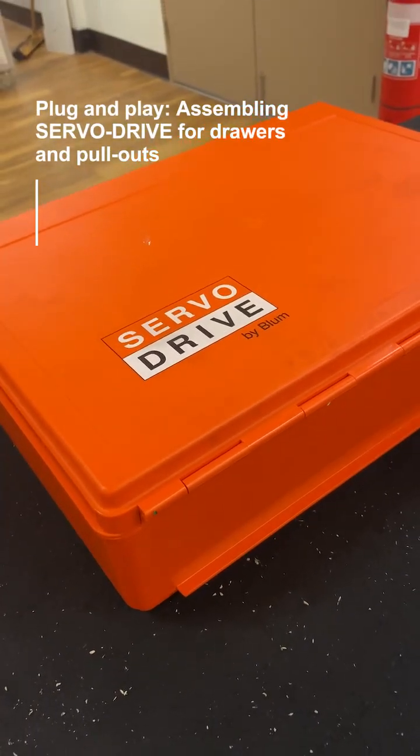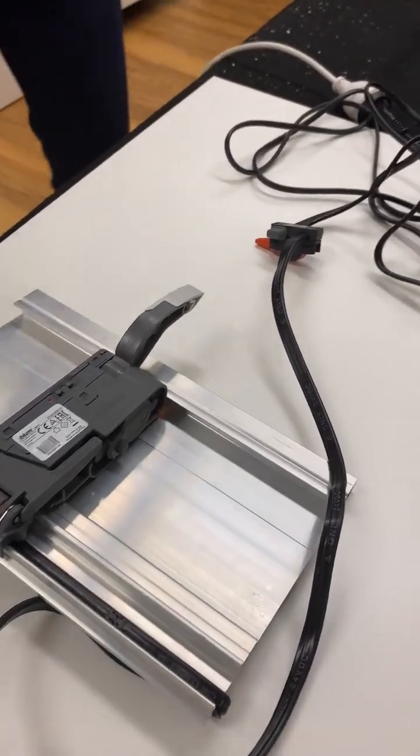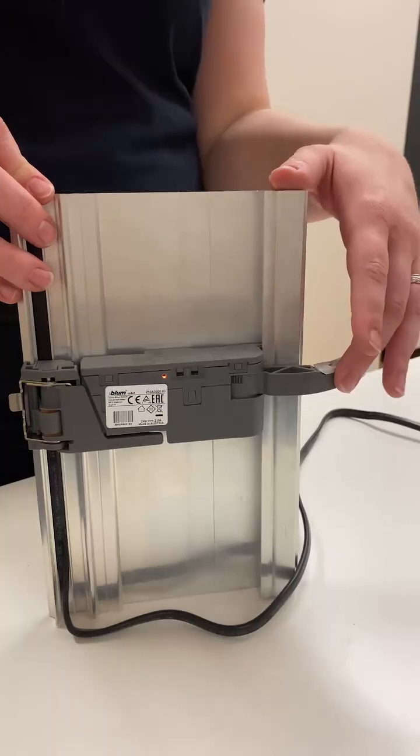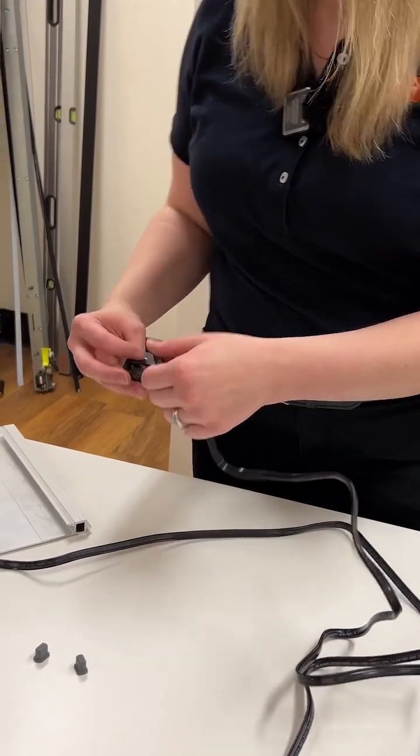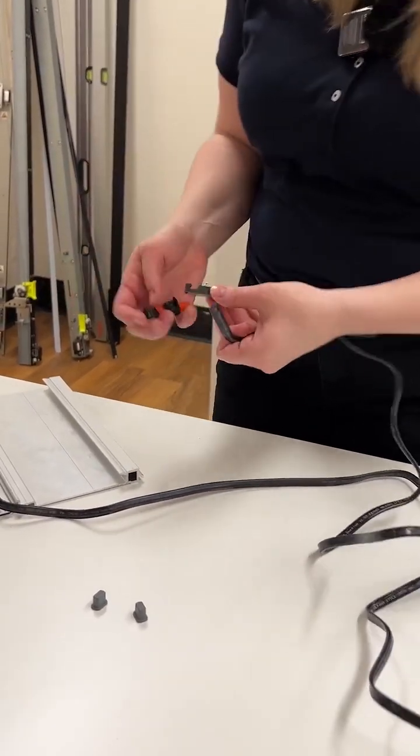Assembling servo drive for drawers and pullouts is as simple as plug-in and play. No electrician is required as the power supply plugs straight into a standard power point. There is no stripping of cables and assembly is virtually tool-free with simple cabling.